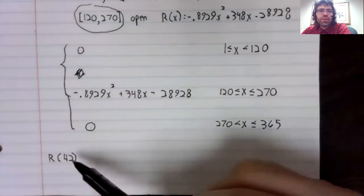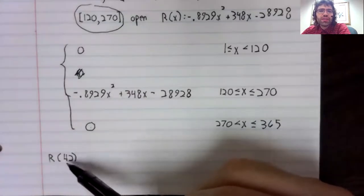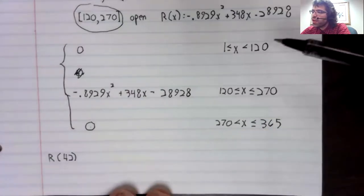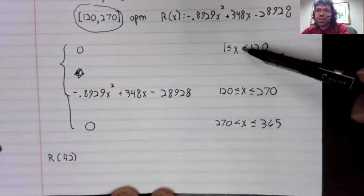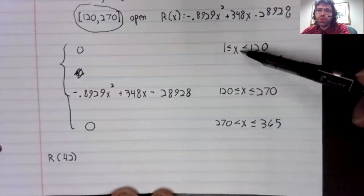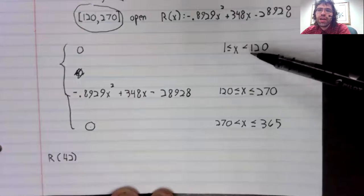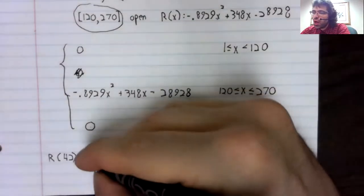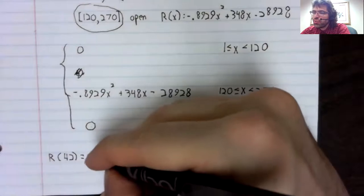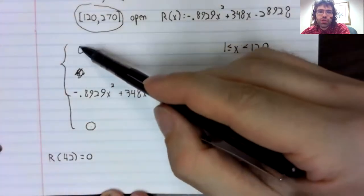You would just say, well, 42 is an x value. Which of these pieces is it in? It's in this piece. 42 is between one and 120, so R of 42 is 0.